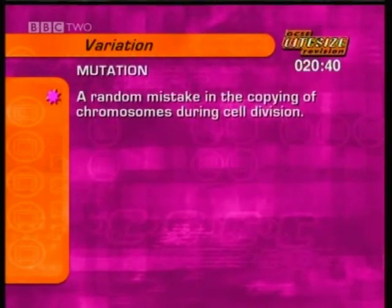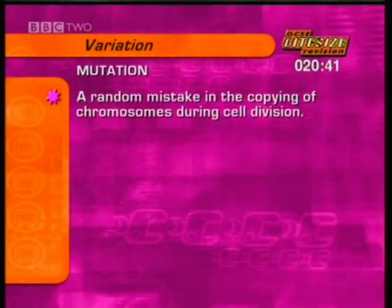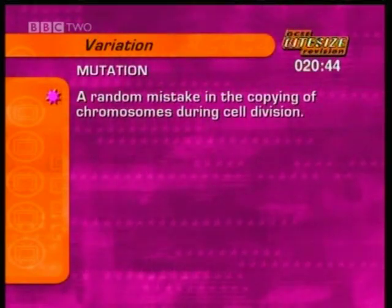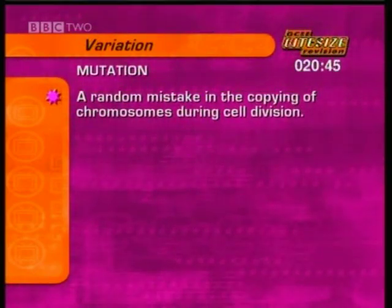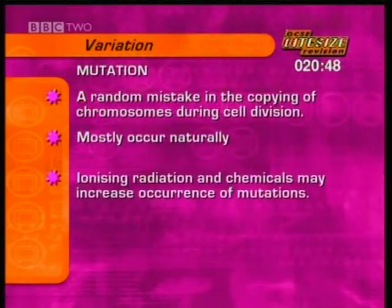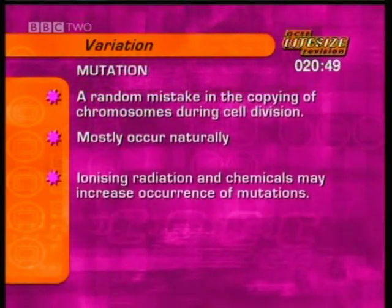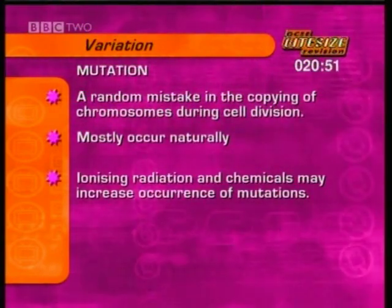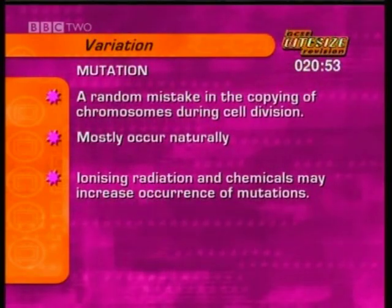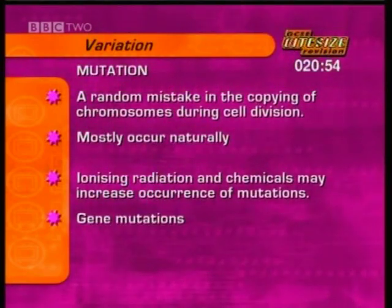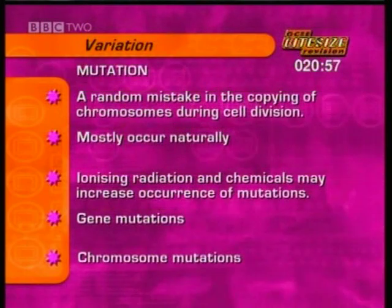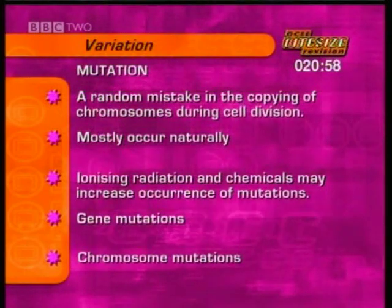A mutation is a random mistake in the copying of chromosomes during cell division. They mostly occur naturally, through ionising radiation, and some chemicals may increase the occurrence of mutations. Mutations are of two types: gene mutations and chromosome mutations.